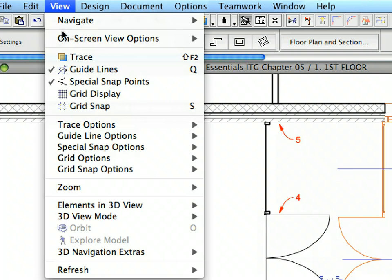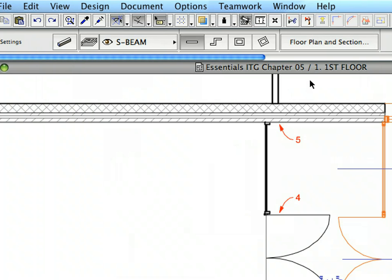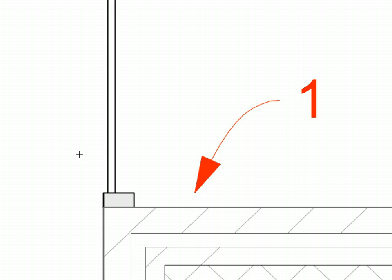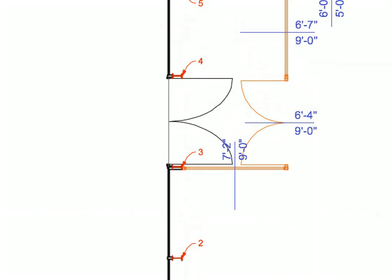Make sure that the True Line Weight option is switched off at the View On Screen View Options menu. This will display all construction elements by uniform thin hair lines. Zoom in to Label 1 as much as necessary to place the column precisely, then click at the point of Label 1 to place the first column. These columns, along with the beams we will place afterwards, serve as the structure on which the Curtain Wall is built. Click on the points of Labels 2 to 5 to place 4 additional columns on the Floor Plan.